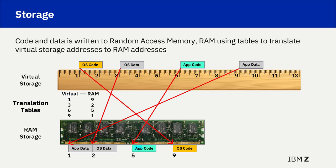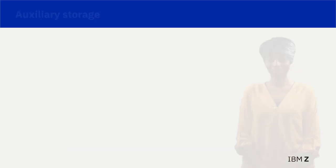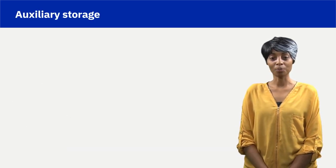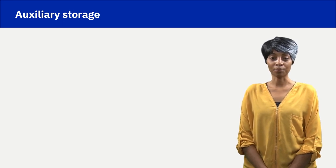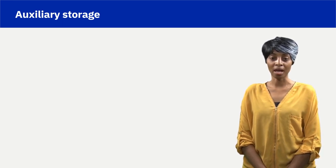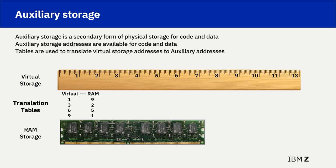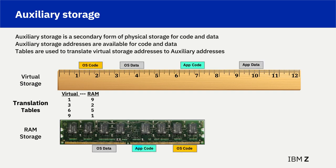The computer identified memory locations is called addressability. A second physical resource available to hold the code and data represented by the virtual storage addressing mechanism is auxiliary storage. The auxiliary storage is segmented into addressable areas to store operating system and application programs.